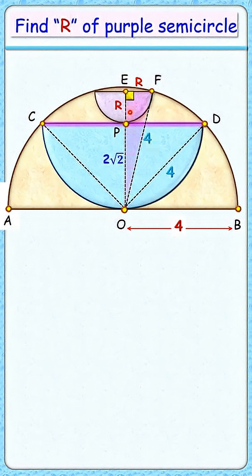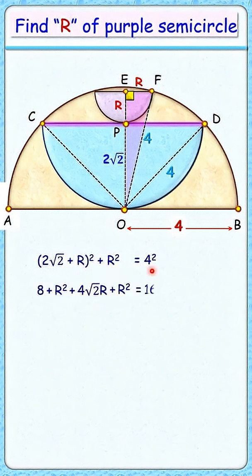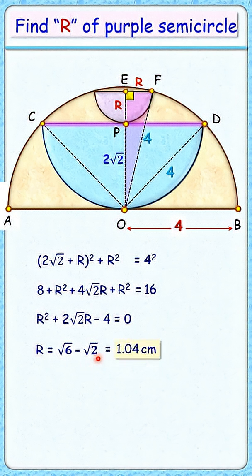In this right angle triangle, applying Pythagoras theorem will get (R + 2√2)² + R² equals hypotenuse square. Opening the bracket applying A plus B whole square identity then plus R square equals 16. Simplifying it will get a quadratic in terms of R. Applying quadratic formula to get value of R as √6 - √2 or 1.04cm, and that's our answer.